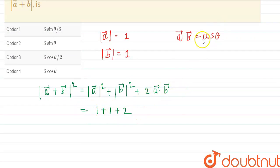a dot b is 2, a dot b is cos theta. So this is 2 plus 2 cos theta. We can take 2 common and this is 1 plus cos theta.